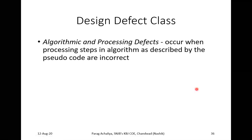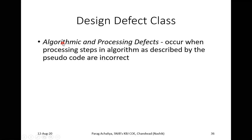Another type is algorithmic and processing defect — the name itself suggests this defect is generated in your algorithm, code, or during data processing. Algorithmic and processing defects occur when the processing steps in an algorithm as described by pseudocode are incorrect, causing the algorithm to function incorrectly.